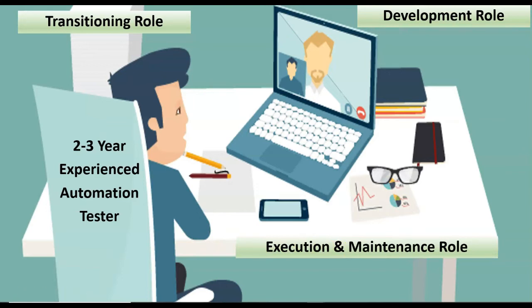I will explain one by one all these roles so you can explain the same in your interview. Starting with the transitioning role, there are 2 major responsibilities. First, get the knowledge transfer (KT) from the manual team — understand the functionality and look and feel of the application to help with automation. Second, get the test cases from the manual team and execute them once manually to understand the flow and functionality of the application.